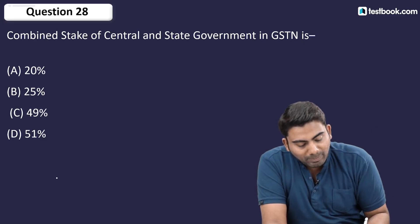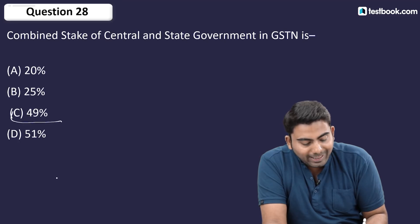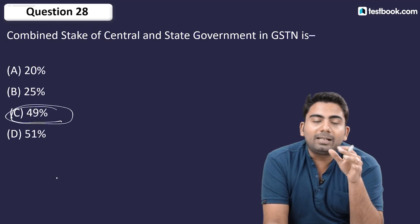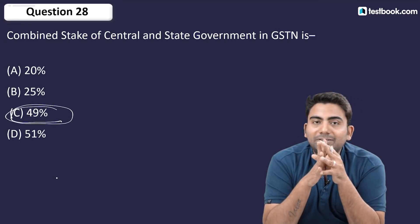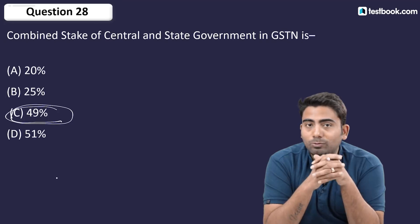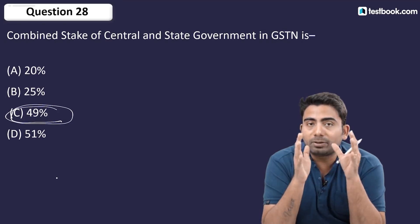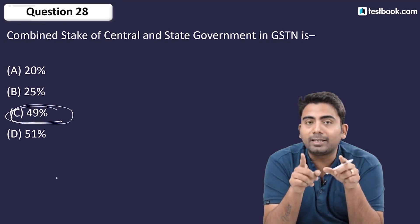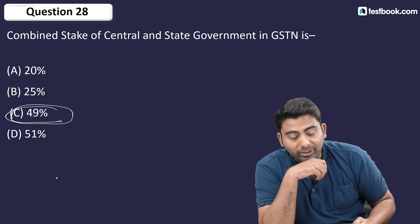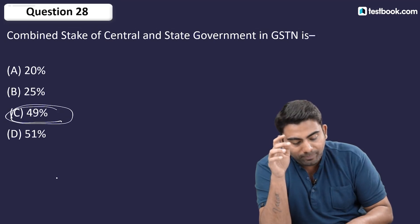Question number 28: The government's stake in GSTN — Goods and Service Tax Network — is 49%. This is also an important question to remember.